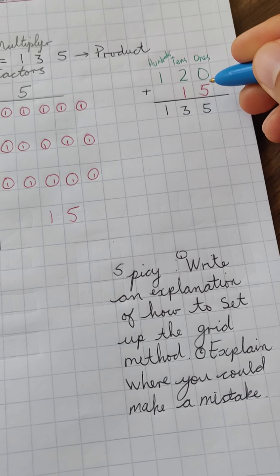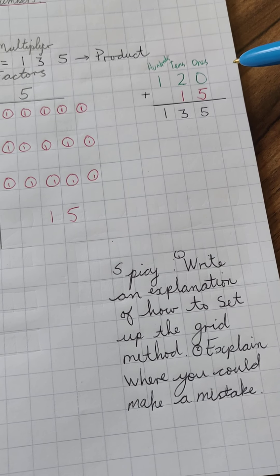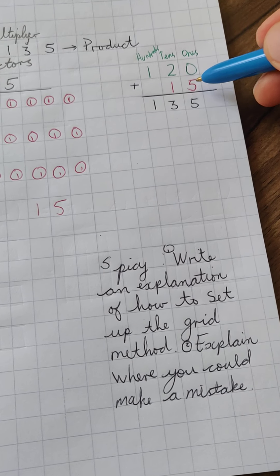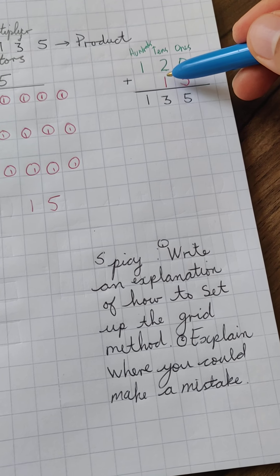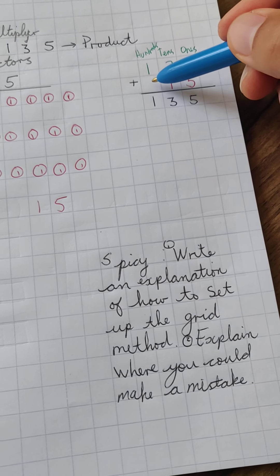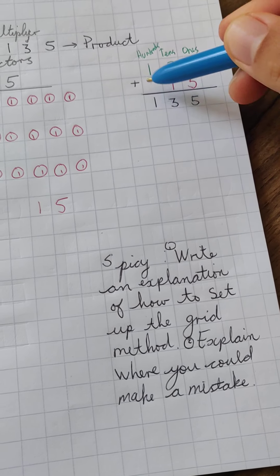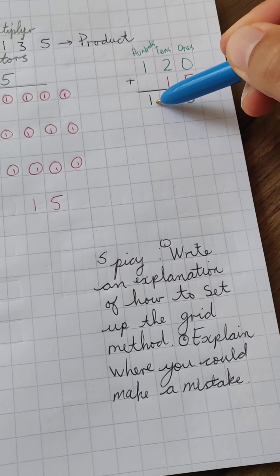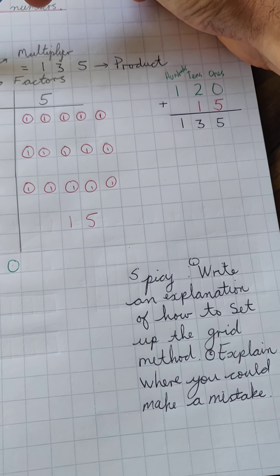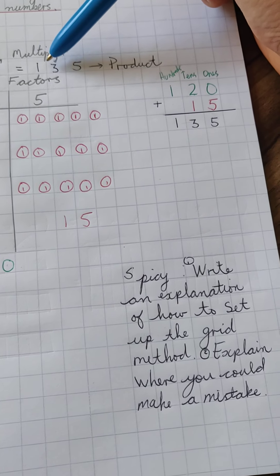So there are no hundreds here for the 15, obviously, but make sure to do that. Just a reminder when we set up our additions. So again, 0 plus 5 is 5. 2 plus 1 is 3. And then 1 plus 0 is 1. So my sum, which is the answer to my addition, is 135. So my product of multiplying 3 times 45 is 135.